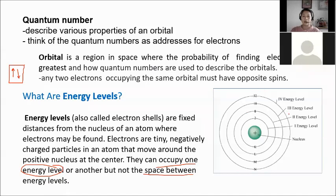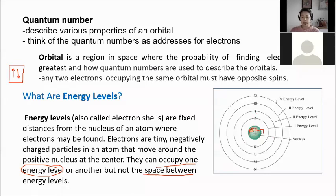The atomic structure is analogous to a solar system — just as planets orbit the sun, electrons orbit the nucleus. The nucleus contains protons (positively charged) and neutrons (no charge). Electrons are assigned to different energy levels orbiting the nucleus.